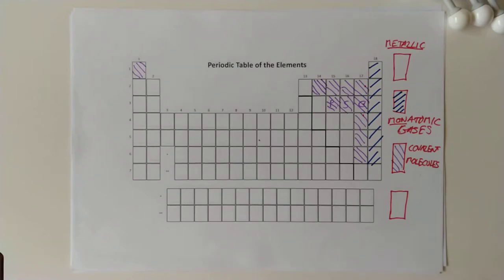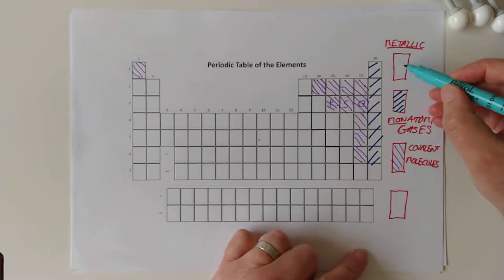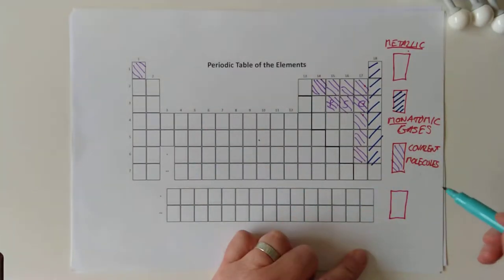If you remember, I'm going to stick to the same color scheme here. These are metallic, and down here the monatomic gases were in this diagonal. Covalent molecules were in this diagonal.